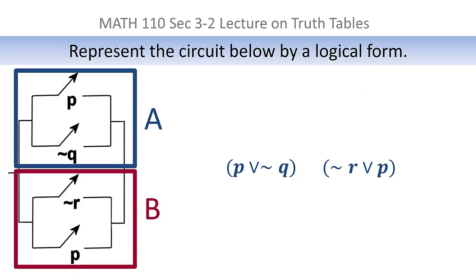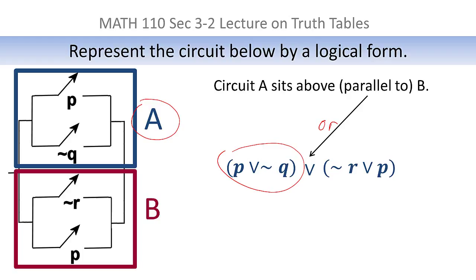Now looking at those, how are they connected? Well, the A circuit sits above the B circuit so that those two circuits themselves are ORed together. Since A sits above B or parallel to B, that's another OR. Remember the OR is a circuit in parallel. So this piece comes from the top parallel circuit. This piece comes from the bottom parallel circuit. And this OR here reflects the fact that A and B themselves are in parallel.